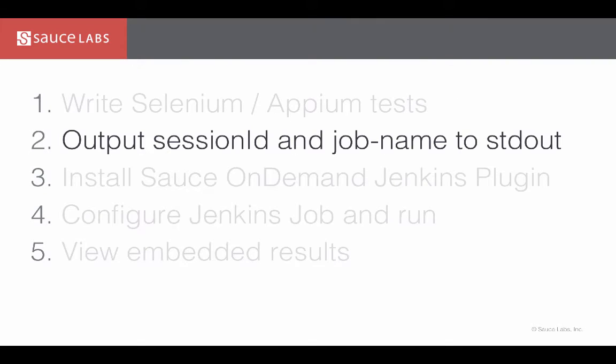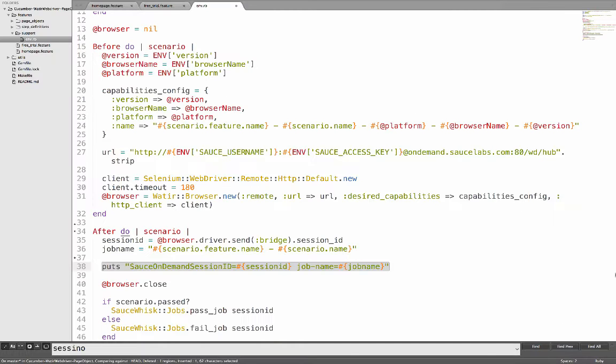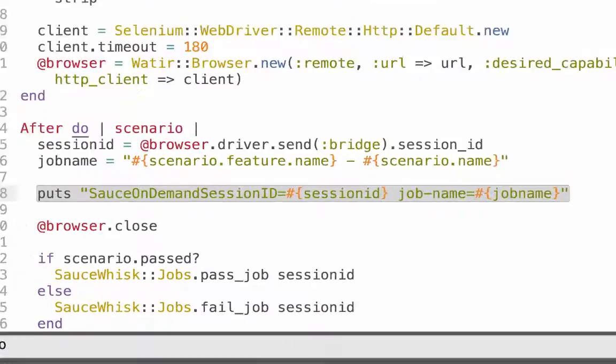The second step is to output the session ID and job name to standard out. This is done in the env.rb file, right here.